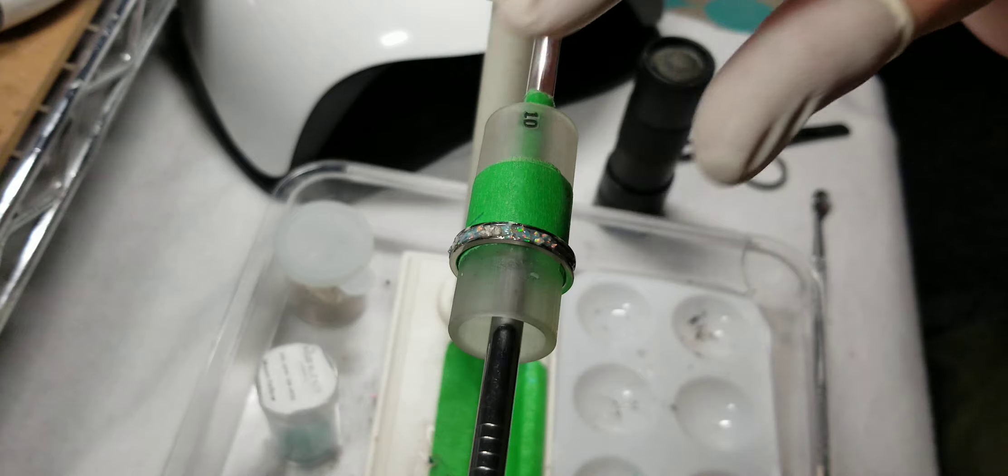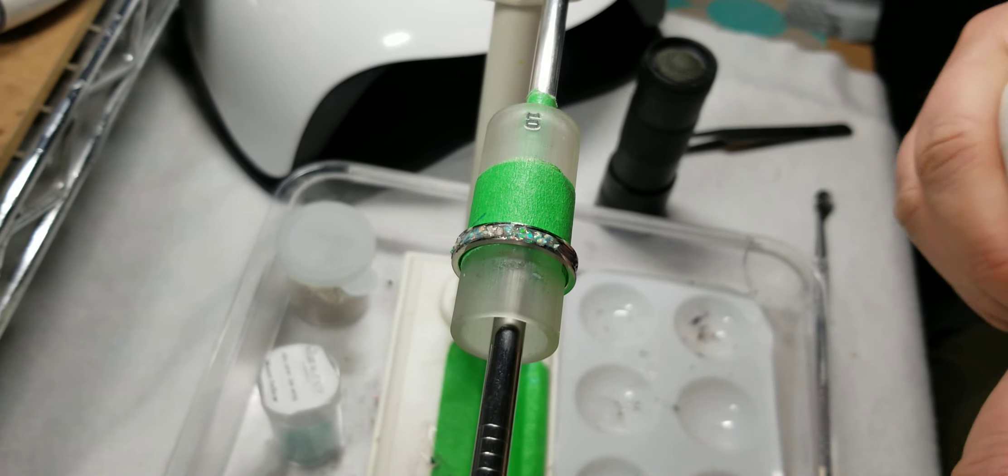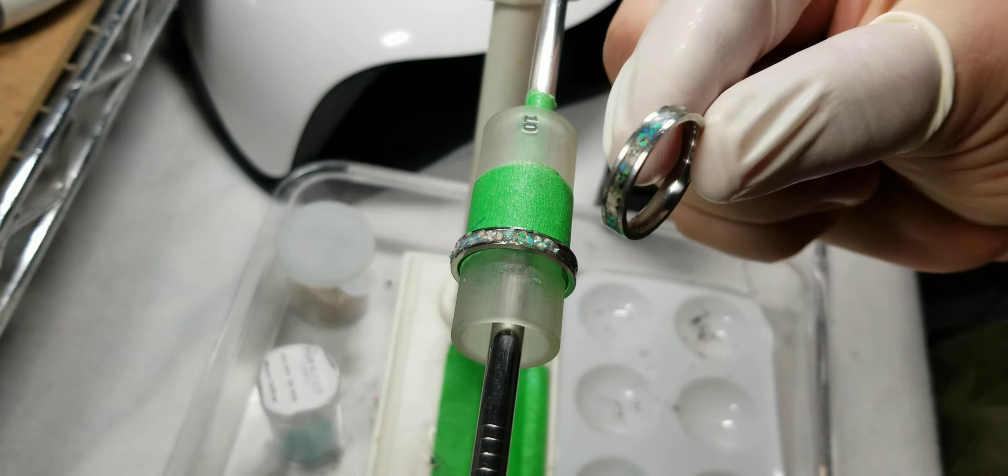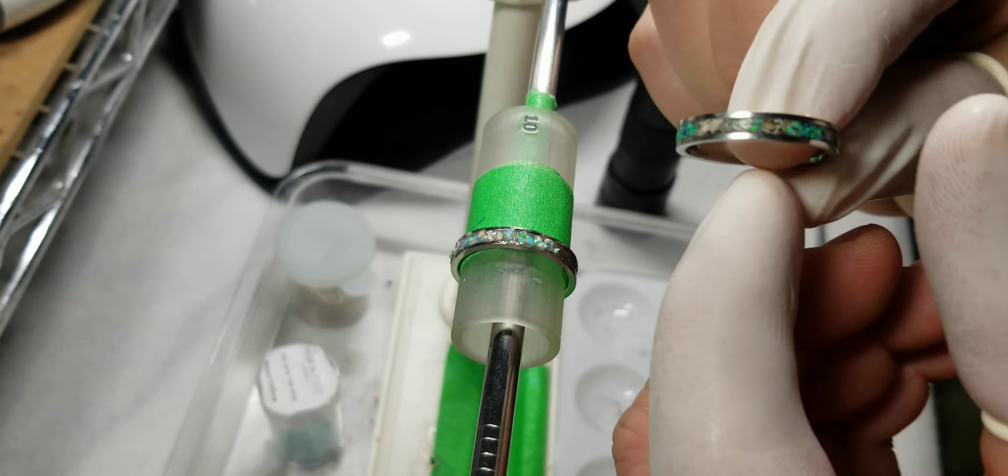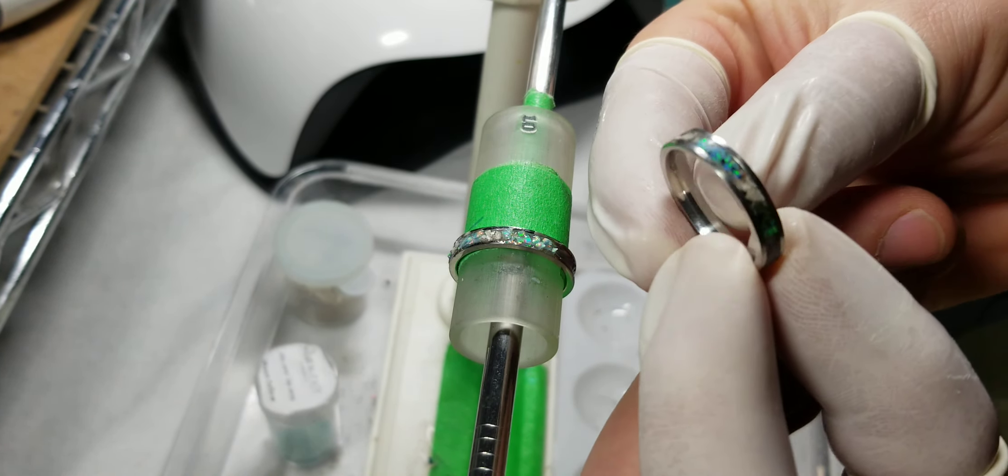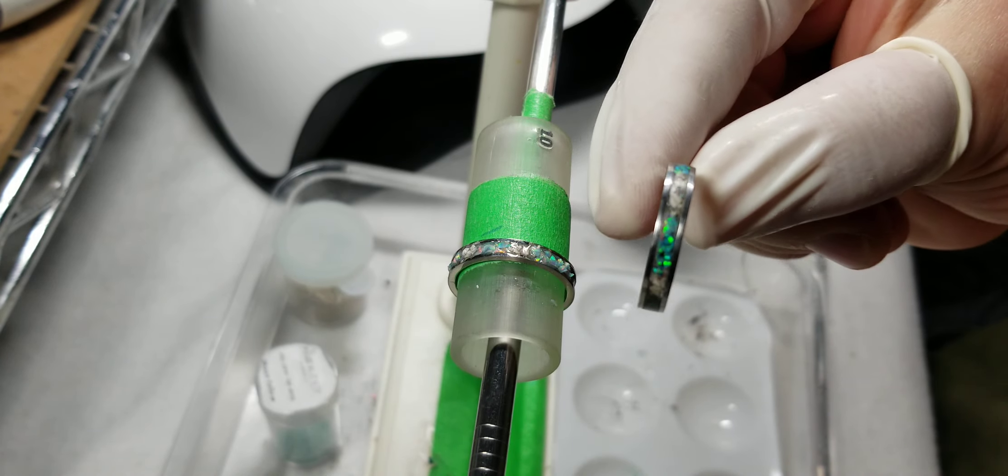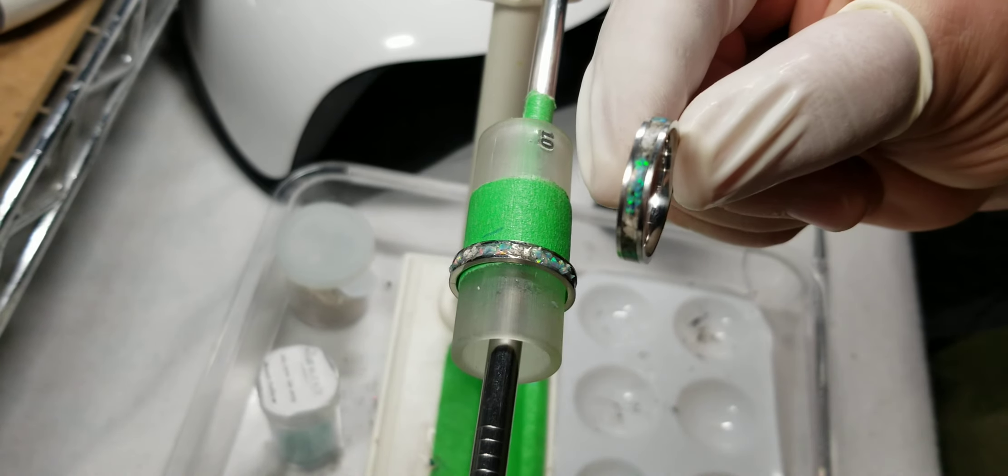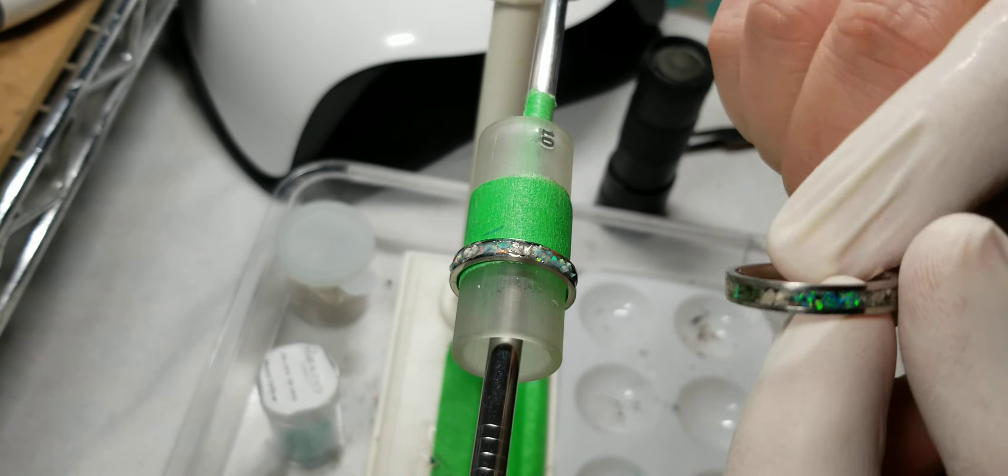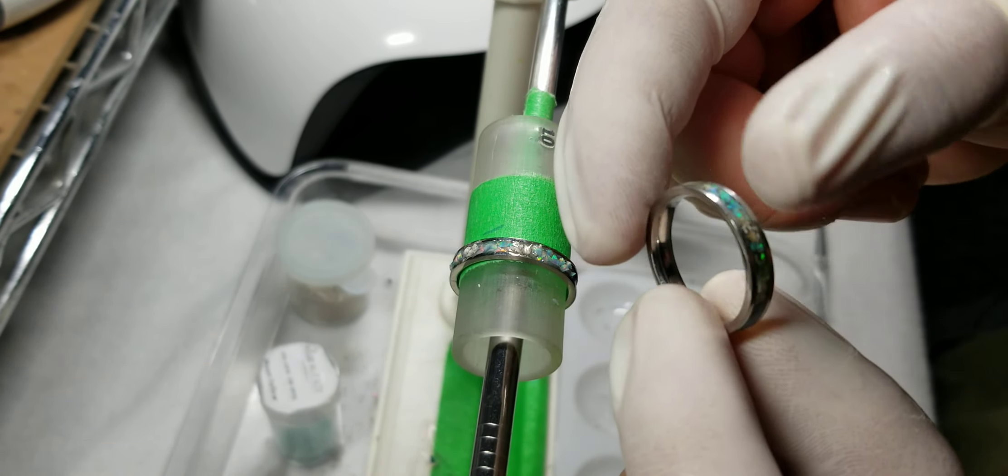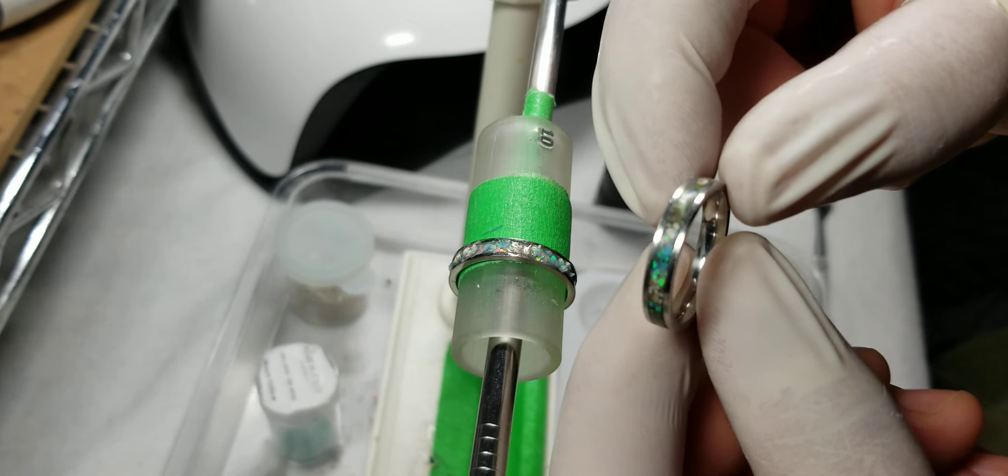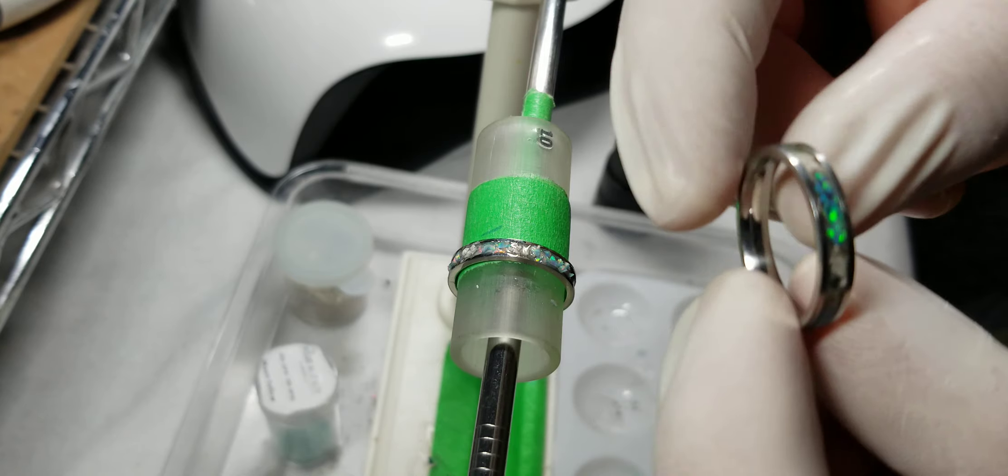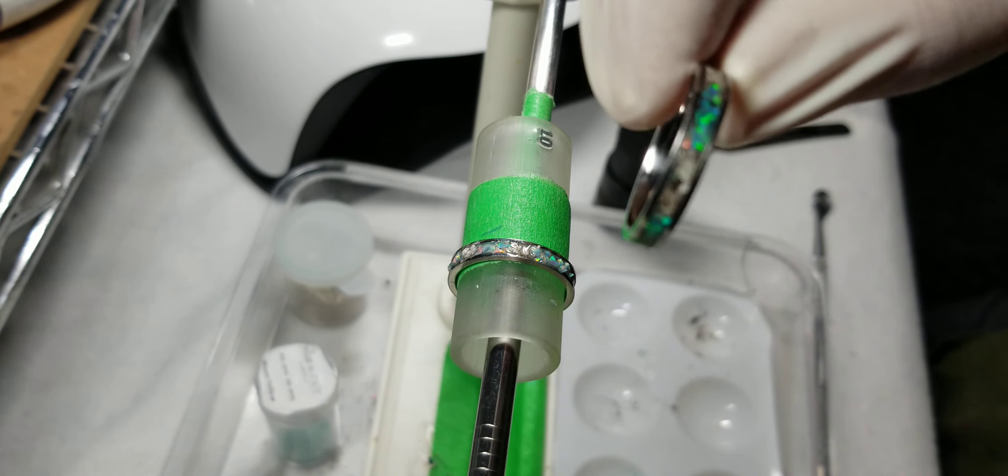I've already started this project a little bit, and just to show you, this is what it looks like once it's done. I've already created a ring for myself with a nice blue opal in it. So this is how the ring looks. It's got a really nice flash in it with my mother's ashes, which I am working with today.